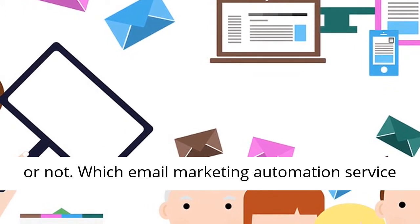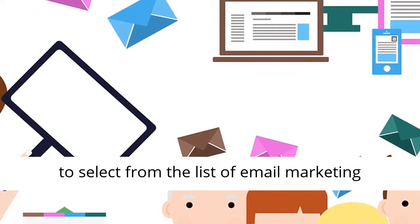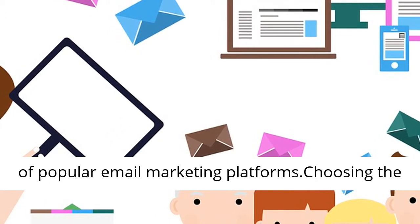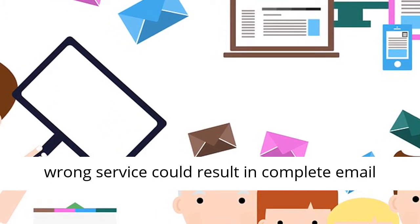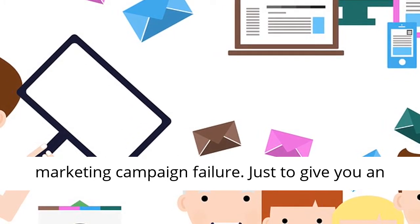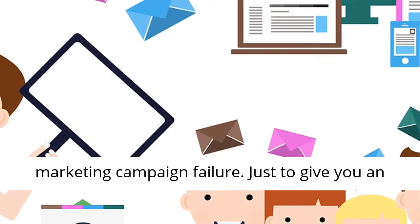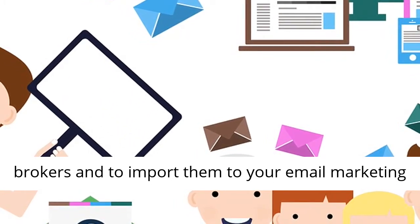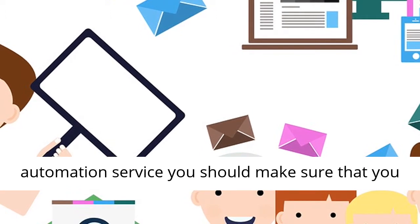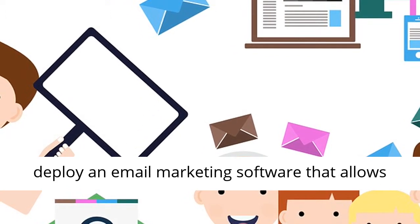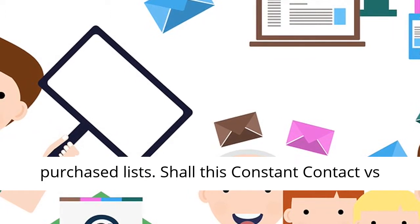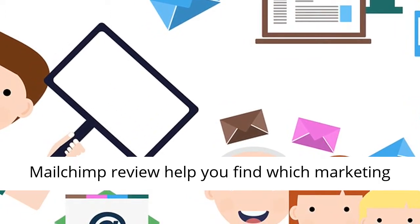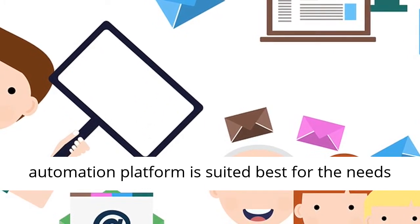Which email marketing automation service to select from the list of email marketing software is a common question in today's world of popular email marketing platforms. Choosing the wrong service could result in complete email marketing campaign failure. For example, if your intent is to buy lists from data brokers and import them to your email marketing automation service, you should make sure that you deploy an email marketing software that allows purchased lists. This Constant Contact vs MailChimp review will help you find which marketing automation platform is best suited for the needs and requirements of your business.